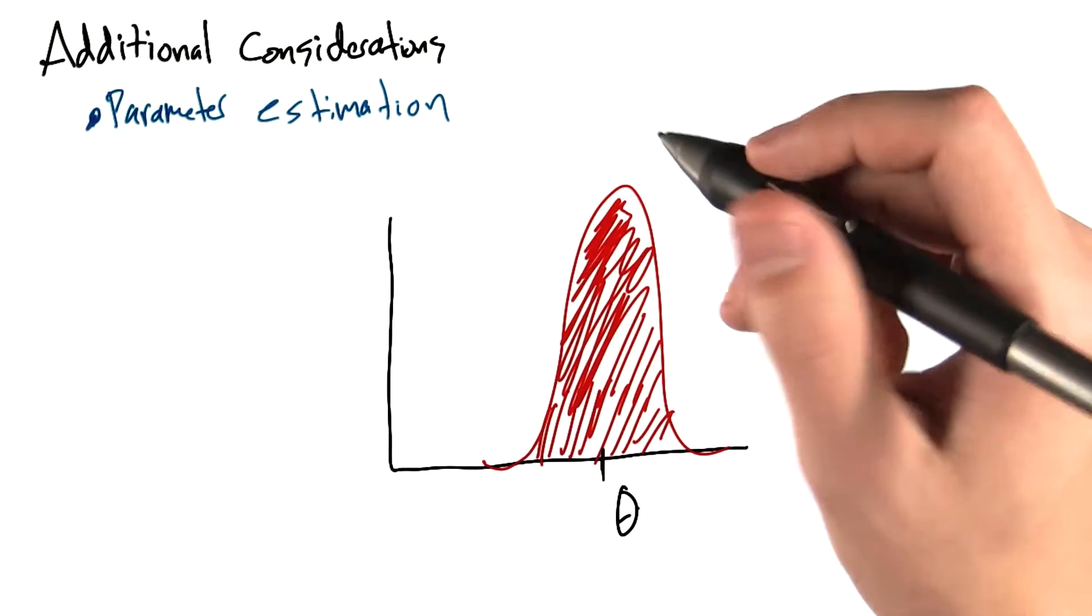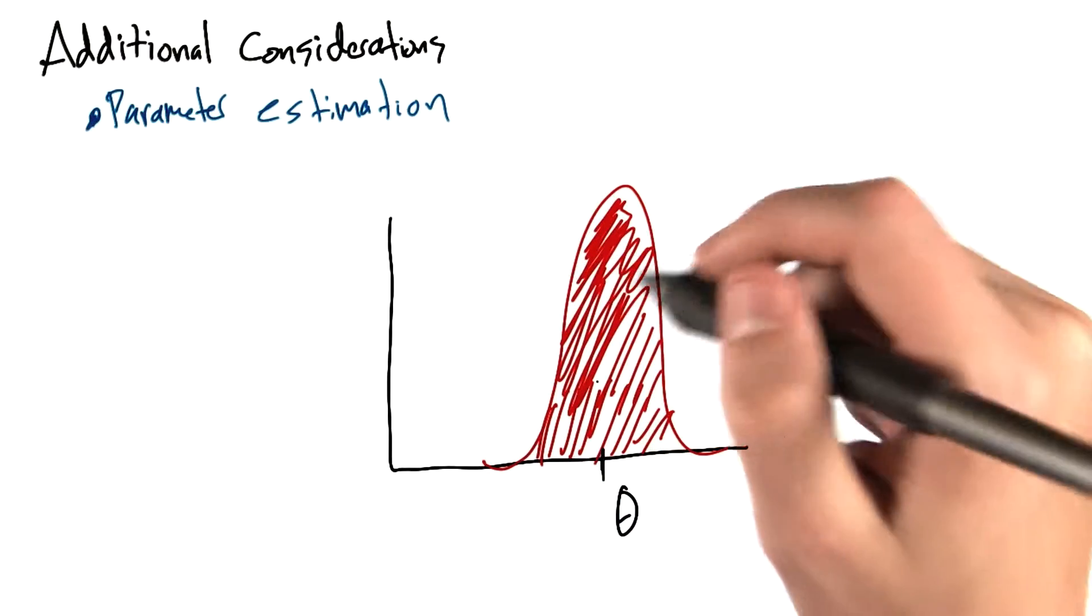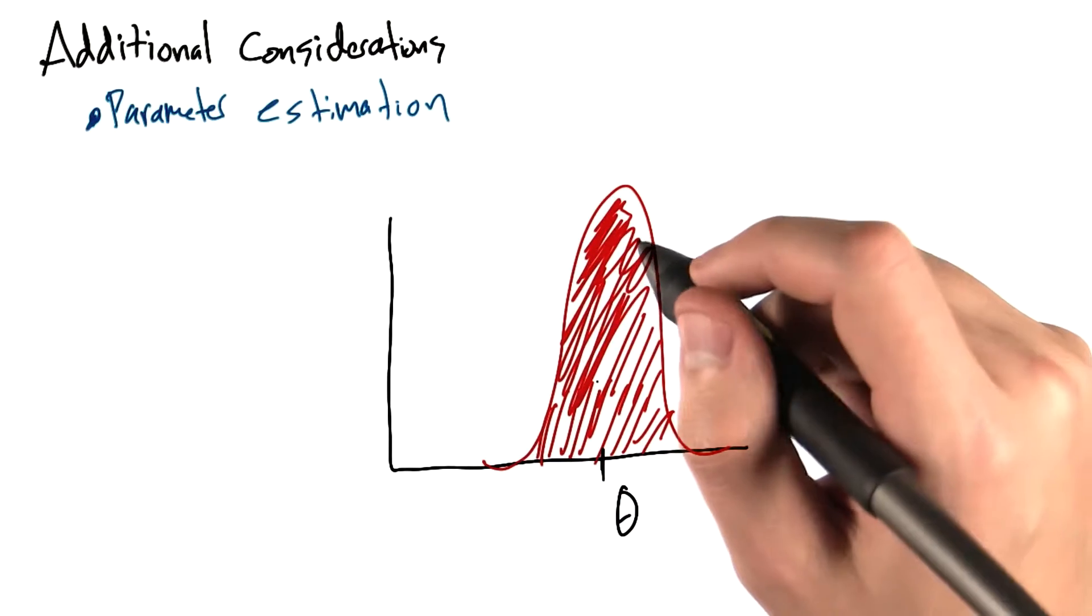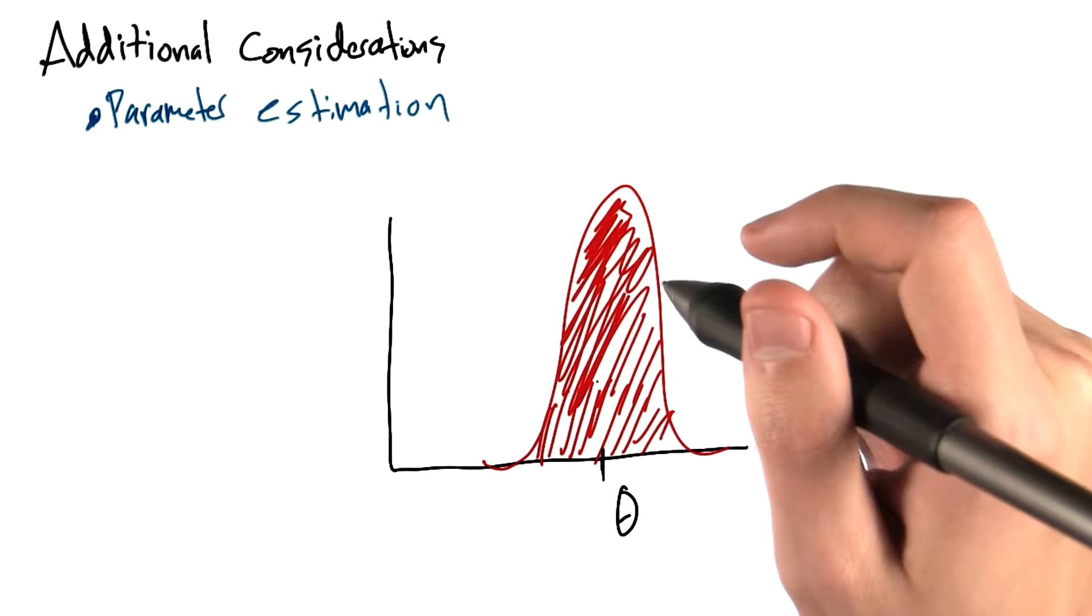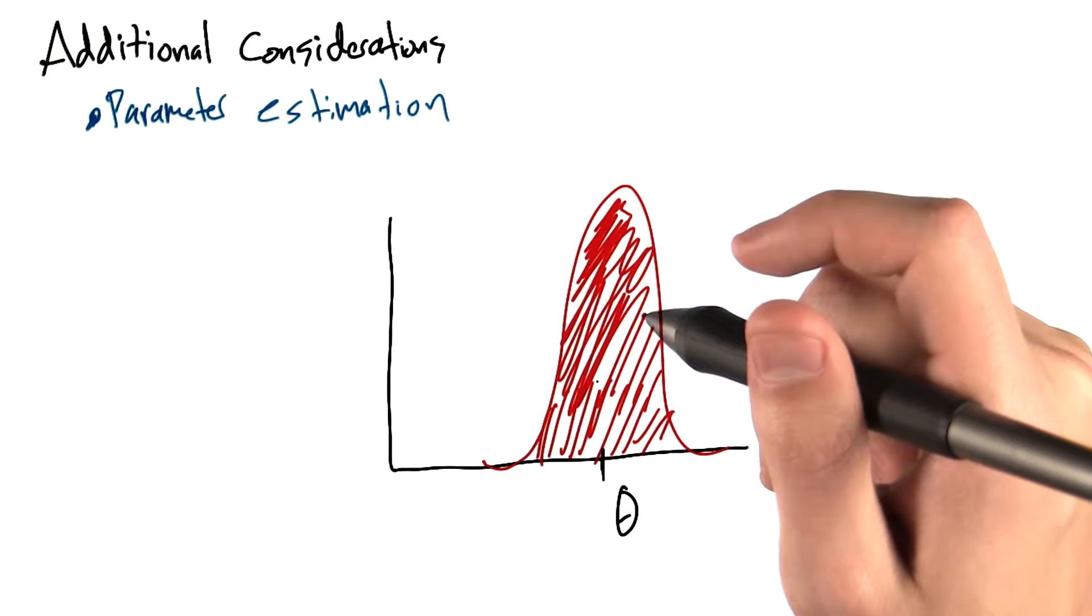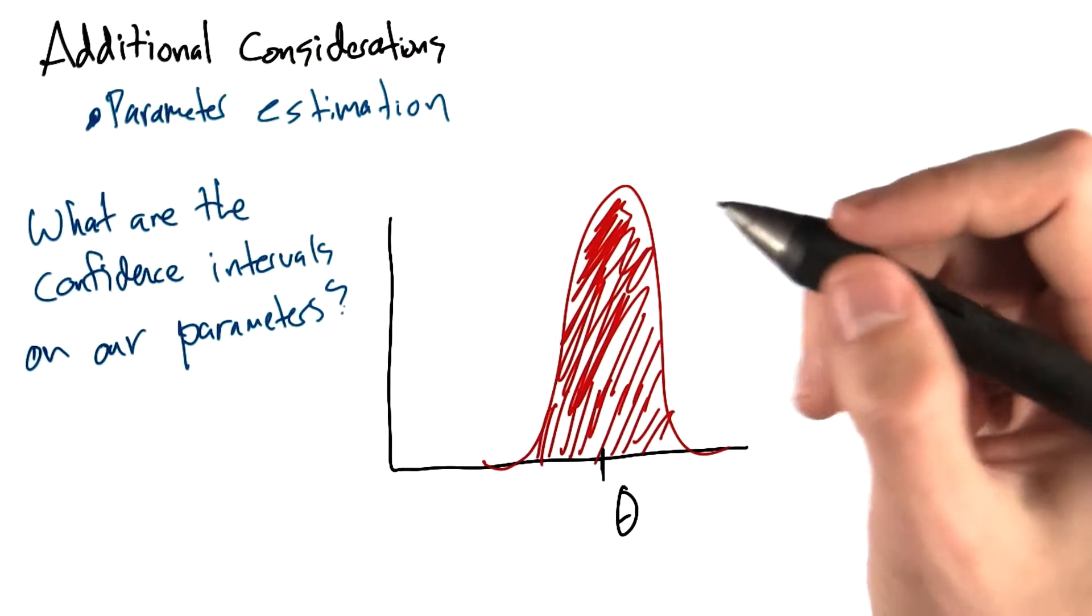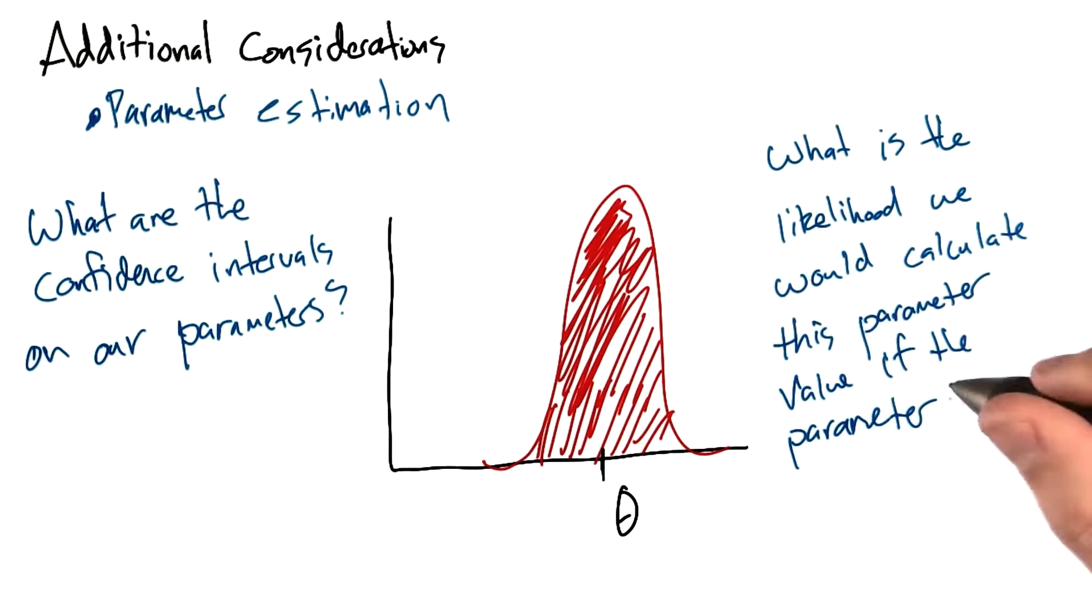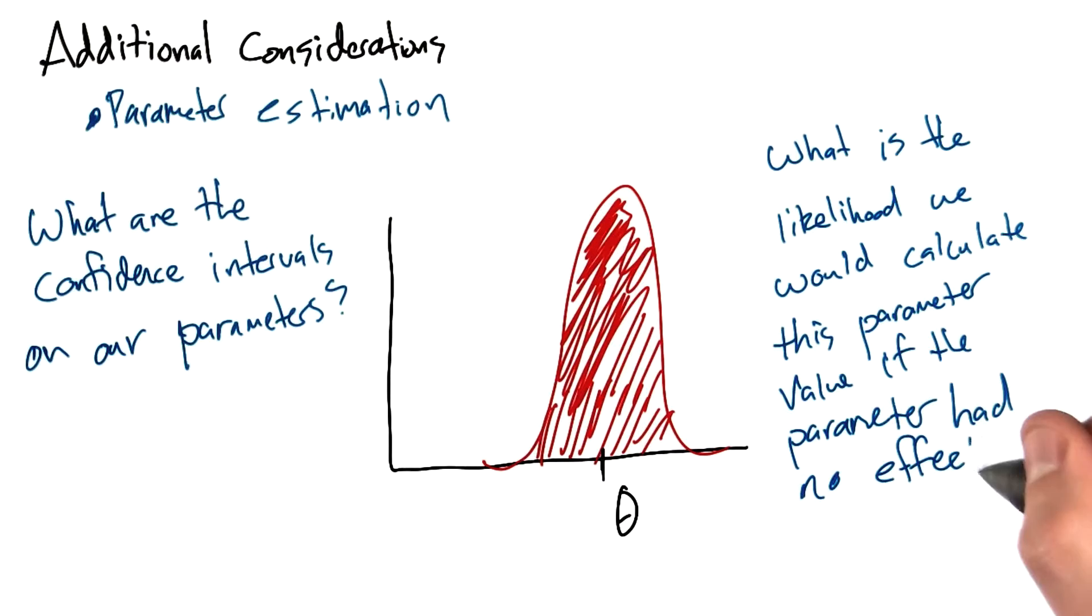Additionally, we haven't really talked about parameter estimation and putting confidence intervals on those parameters. In the models that we've built, we've given exact values for all of our thetas, but as you can imagine, there's some confidence that we have in those values. You can imagine doing more thorough statistical analysis and saying, what are the confidence intervals on these parameters? And we could answer questions like, what is the likelihood that I would get this value for this parameter if this parameter actually had no effect on our output variable?